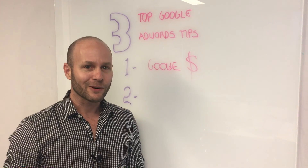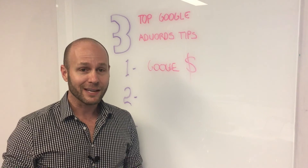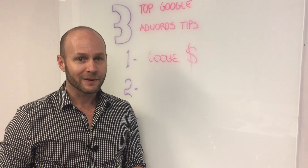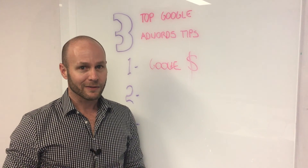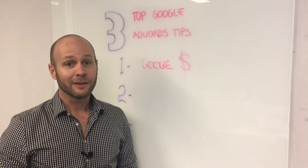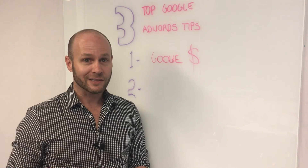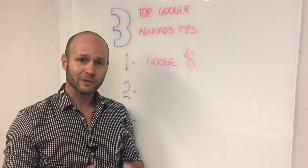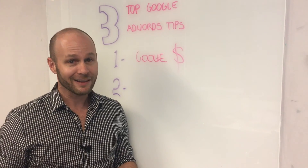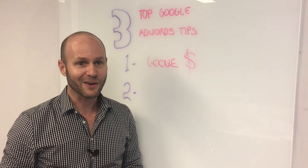The second tip is to do your keyword research — very, very important. I've seen so many clients spend a lot of money on keywords that might drive traffic to their website but don't actually convert into sales. There are plenty of ways to check how your keywords are performing within AdWords. You can use things like auction insights, which tells you who else is bidding on those key terms. If you look through the list and none of them are your competitors, you can be pretty sure there's a reason for that.